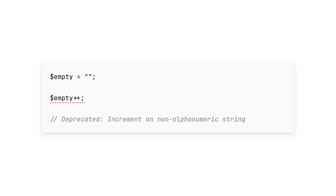A composer update will help you solve them if they happen in vendor code, and otherwise they are pretty small changes you have to make in your own project code. Here's the first one: using ++ on empty non-numeric or non-alphanumeric strings is now deprecated. Basically if you're using ++ on something that it shouldn't be used on, PHP will tell you this is going to go away in PHP 9 — you better fix it.